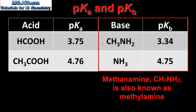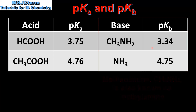Next we look at the bases. The two weak bases in the table are methanamine and ammonia. Methanamine has a pKb of 3.34 and ammonia has a pKb of 4.75. Just like the pKa, we can use the pKb to determine which base is the strongest. The strongest base in the table is methanamine because it has a lower pKb value than ammonia. To summarize: the lower the pKa value the stronger the acid, and the lower the pKb value the stronger the base.